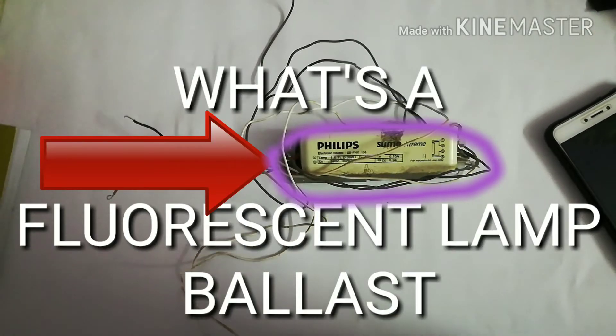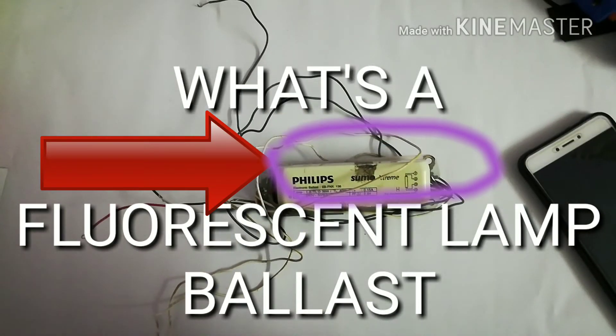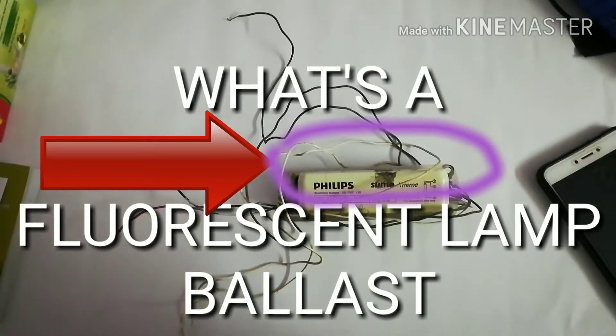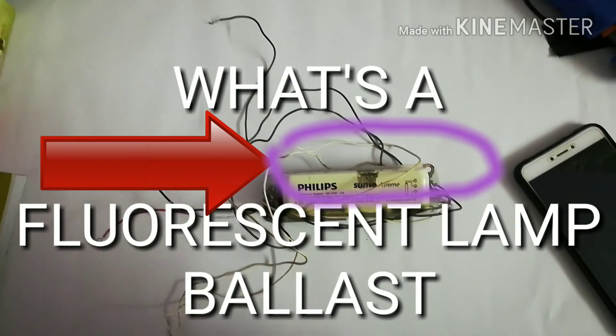What's up guys! Today we are going to talk about how a fluorescent lamp works. It's commonly called a fluorescent lamp in the US and other parts of the world, but it's called tubelight in India.